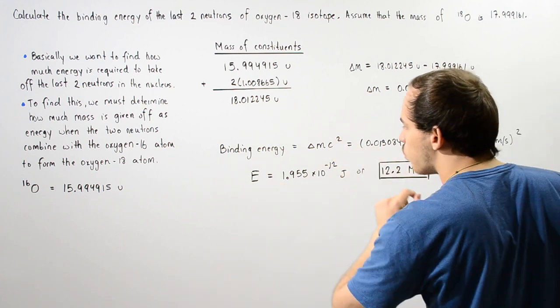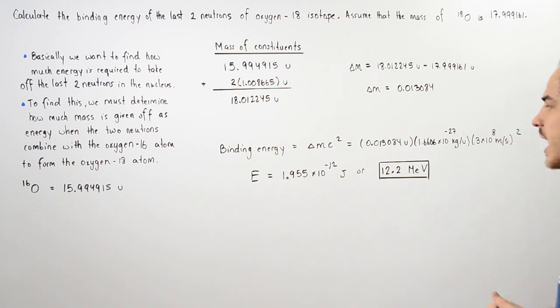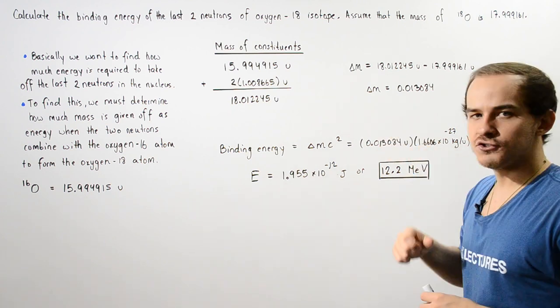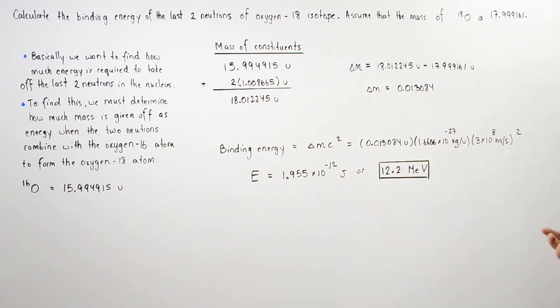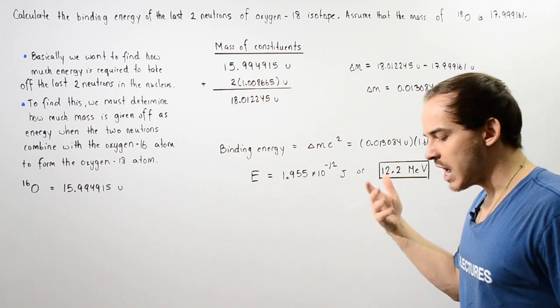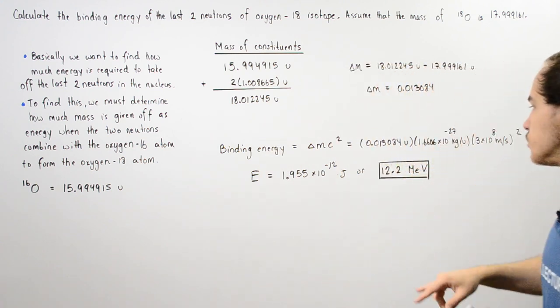We get about 1.955 × 10⁻¹² joules, and this corresponds to about 12.2 mega electron volts, or 12.2 × 10⁶ electron volts.